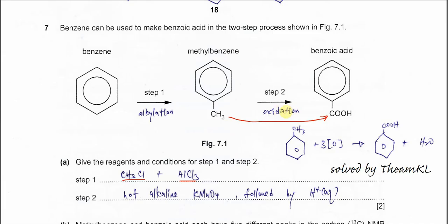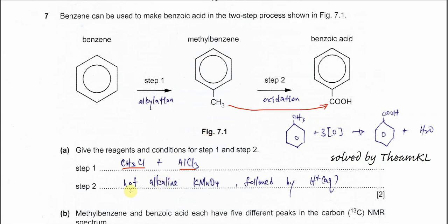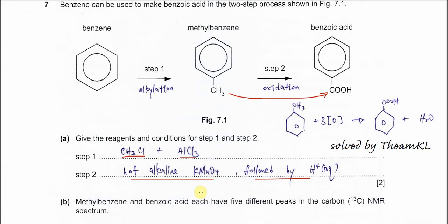To oxidize the alkyl benzene — in this case methylbenzene — we need to use hot alkaline KMnO4. After that, it needs to undergo acidification, so we put dilute acid to react with the products. After the hot alkaline KMnO4, it actually forms the benzoate ion, which then needs to be acidified with H+ to form the COOH group.